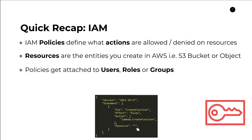Users are typically people that have their own dedicated login on an AWS account. Roles can apply to both users/people or other AWS applications like a Lambda function or even an EC2 instance. And then you also have groups, which are just collections of users that all fall within the same category and therefore have the same sets of permissions.